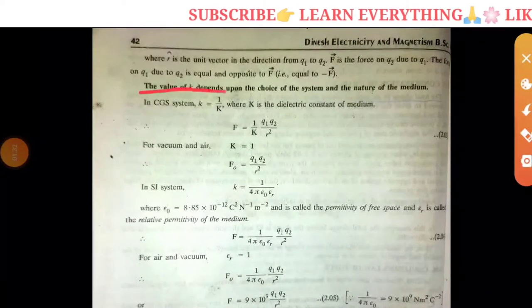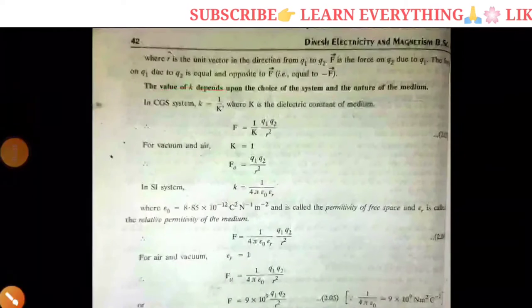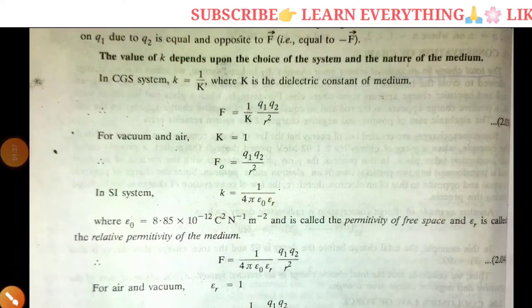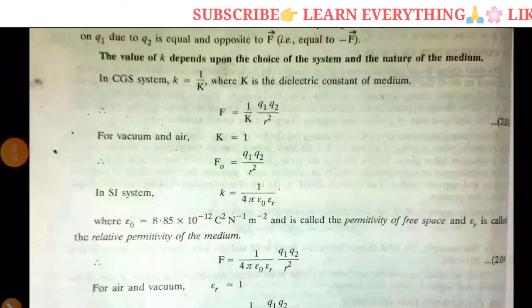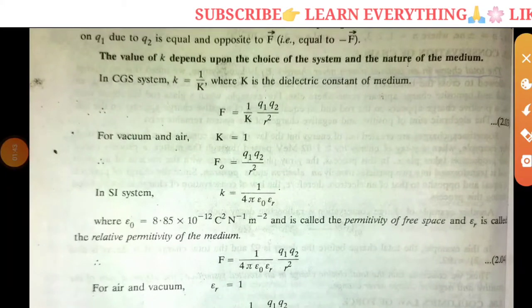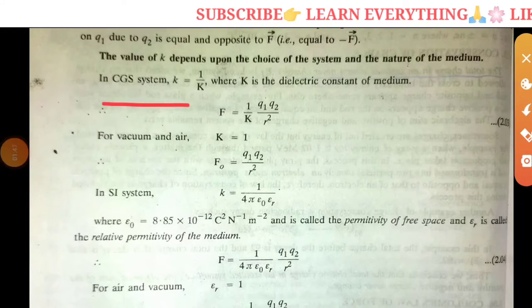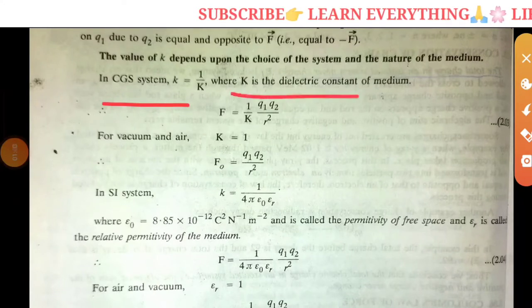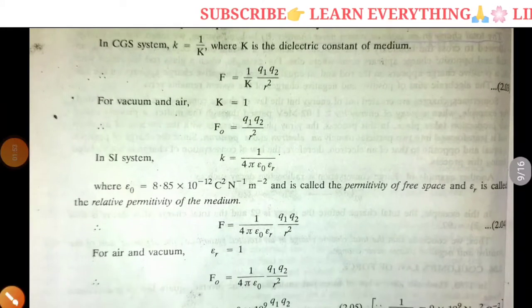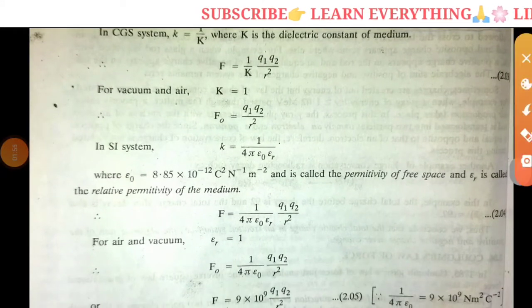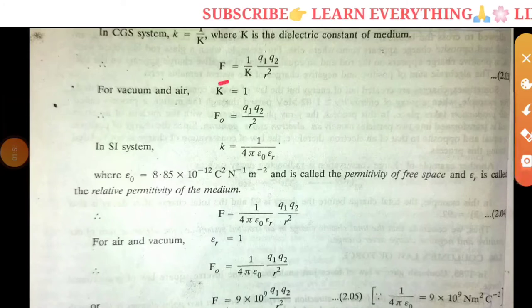The value of K depends upon the choice of system and nature of medium. In CGS system, K equals 1 over K, where K is the dielectric constant of that medium. The dielectric constant is 1 for vacuum, so the value of K is 1.